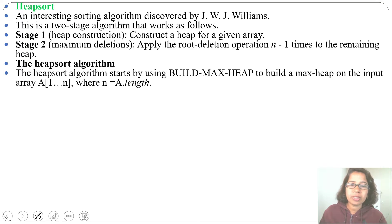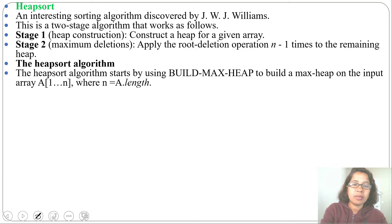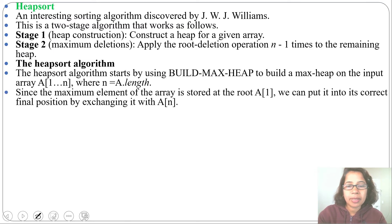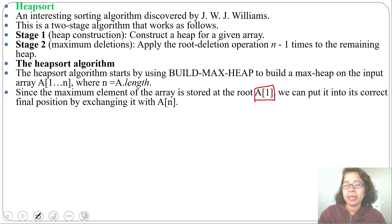The HeapSort algorithm starts by using buildMaxHeap to build a MaxHeap on the input array A, with indices starting from 1 to n, where n is the array length. I already discussed the buildMaxHeap procedure that builds a MaxHeap from a given array. Since the maximum element of the array is stored at A[1], that is the first element,